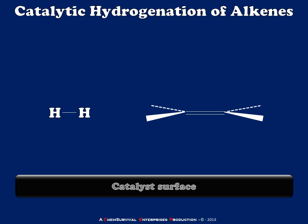Hey everybody, Professor Davis here from ChemSurvival.com and the YouTube channel ChemSurvival, to show you the mechanism of catalytic hydrogenation of an alkene. What I'm showing you here is essentially what happens when you take an alkene and mix it with hydrogen in the presence of a catalyst, which is usually something like palladium or platinum on carbon.